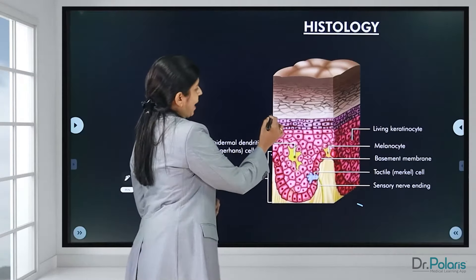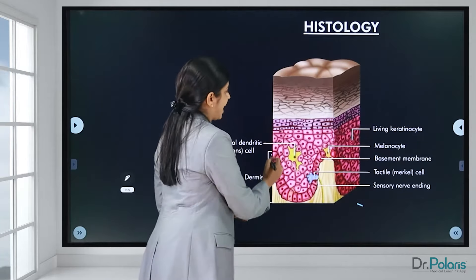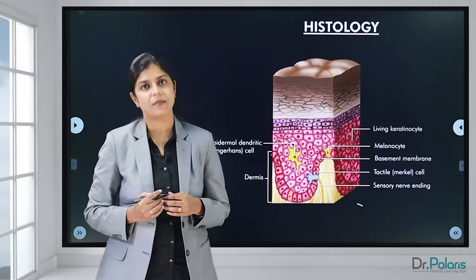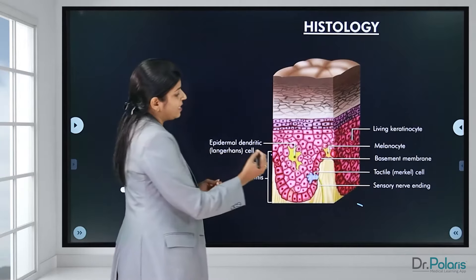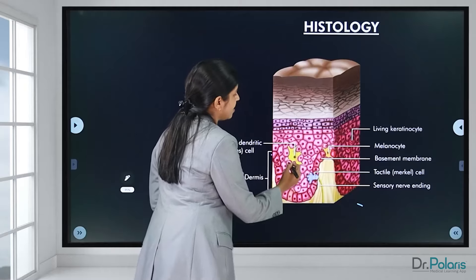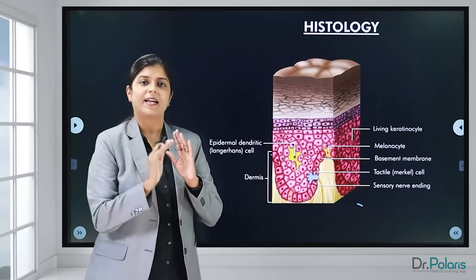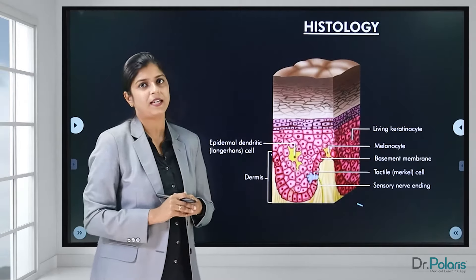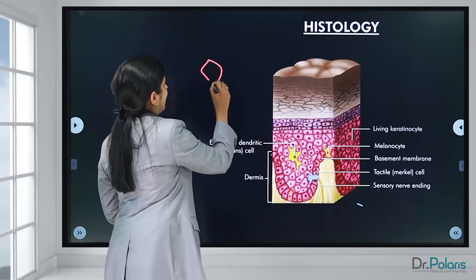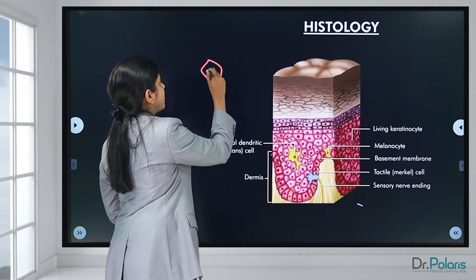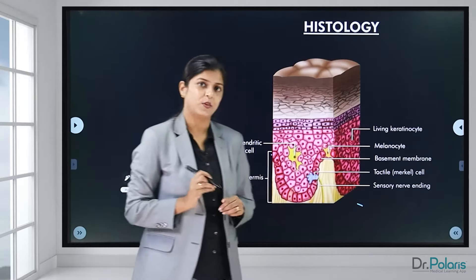The skin is lined by the epidermis and the dermis. 'Epi' means above. The epidermis is lined by stratified squamous epithelium — because there are multiple layers of squamous cells or keratinocytes stacked upon each other. That is why it is called stratified squamous epithelium. The main cell in the epidermis is a squamous cell — a polygonal cell with a centrally placed nucleus.